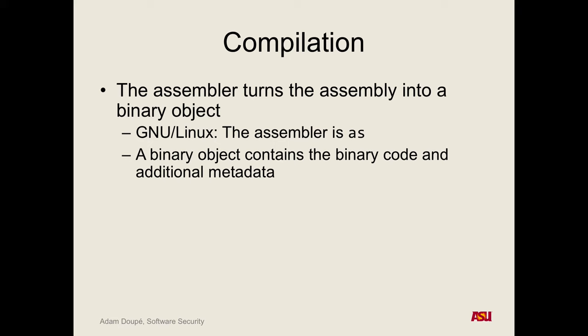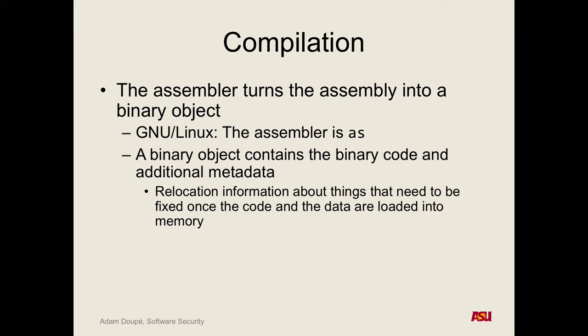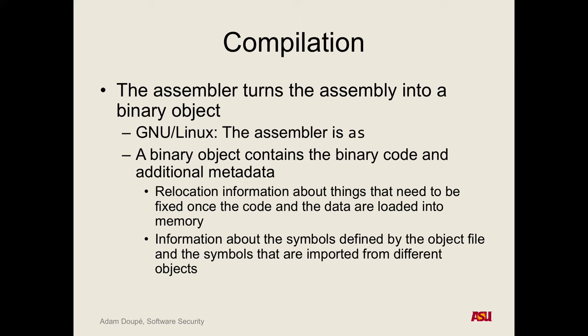We'll also see relocation information. Some binaries are written so they can be shifted around and executed in different locations in the address space — every time not executing at the same place. We'll study this more when we look at ASLR and those techniques. Also debugging information: which assembly instruction corresponds to the start of the main function in the C program? Or where the variable 'foo' corresponds to. When you compile your program with gcc -g, it adds a bunch of metadata so it can do this mapping back.